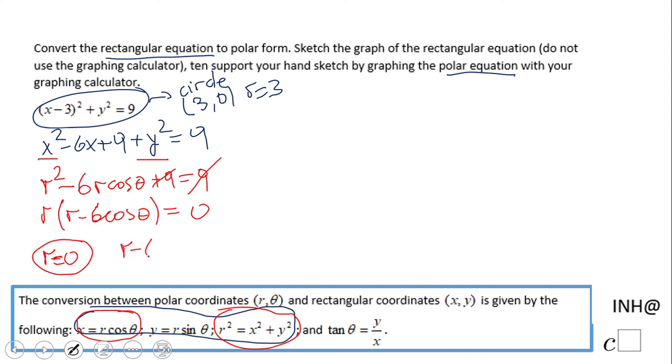Which gives us R equals 6 cosine of theta. Okay, these two equations represent the polar form of the given equation, and this one is the pole itself. R equals 0 is the pole, and we're gonna concentrate more on this guy.